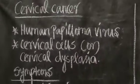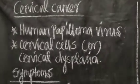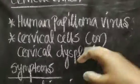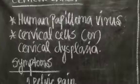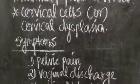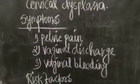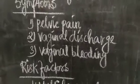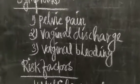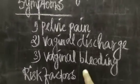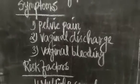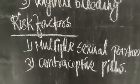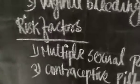In cervical cancer, we can see abnormal growth of cervical cells. Symptoms include pelvic pain, vaginal discharge, and other related signs. Sexual partners are also a relevant factor in this context.